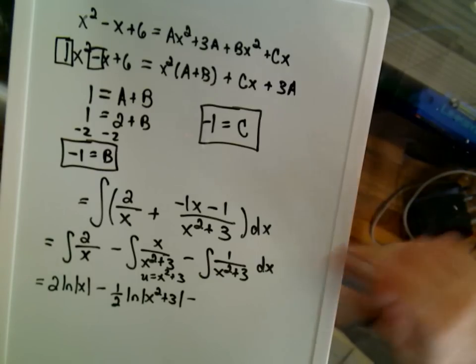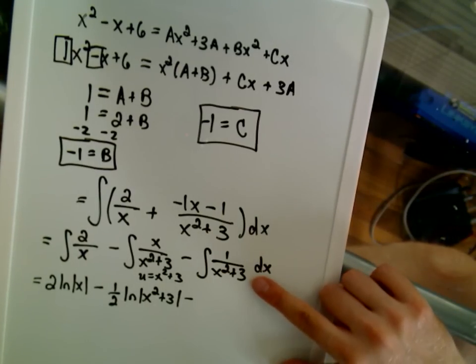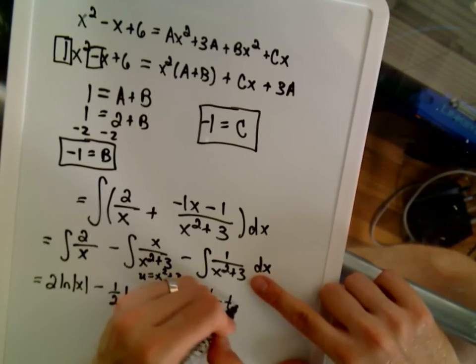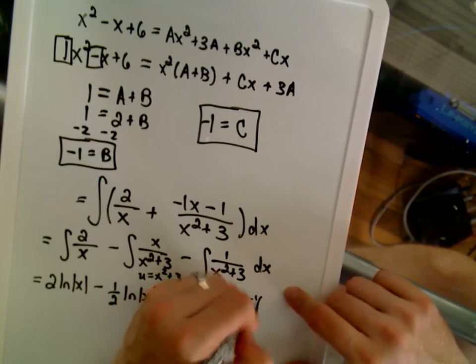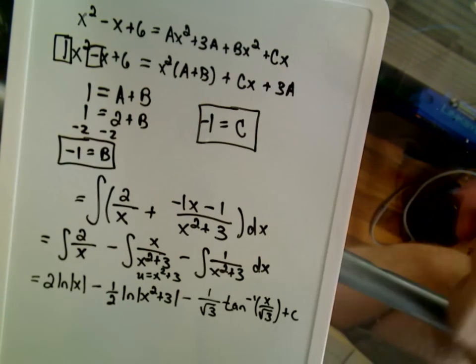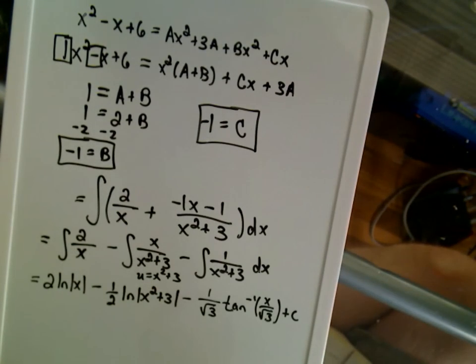And then on our last one, we simply have to use our arctangent formula. So it says we take 1 over the square root of the number, and then we take arctangent of our variable over the square root. We'll tag on our plus C, and there's our anti-derivative.